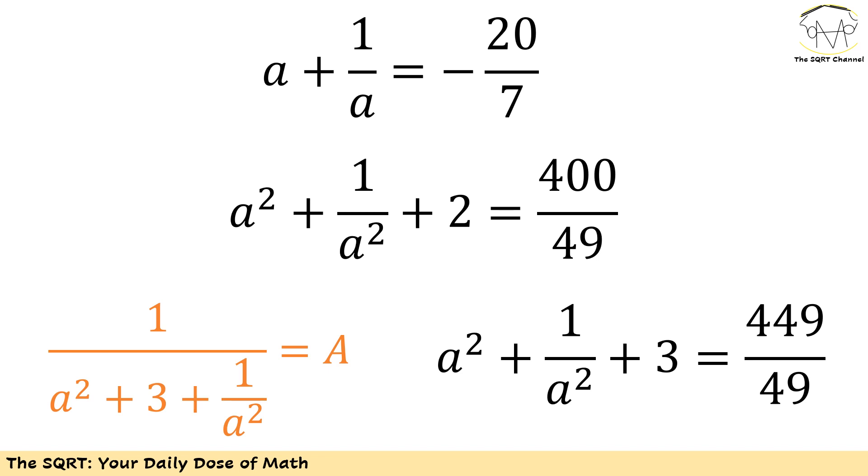Now I have a plus 1 over a as negative 20 over 7. If you take power of 2 of both sides you are going to end up with a squared plus 1 over a squared plus 2 equals to 400 over 49.